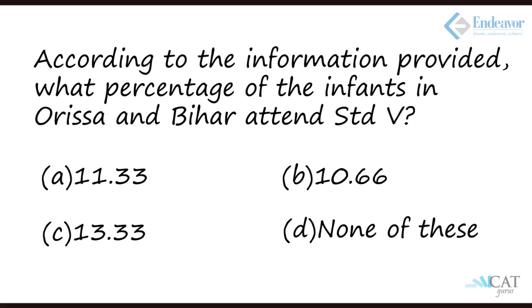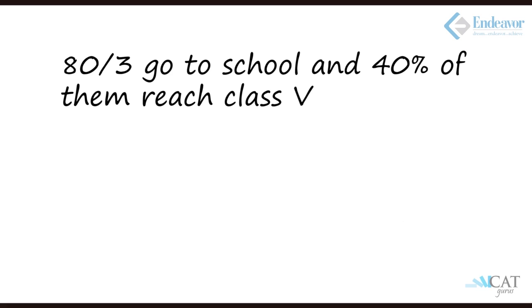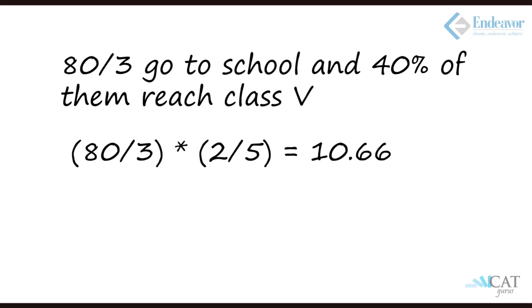Question 1: What percentage of infants in Orissa and Bihar attend Standard 5? If 100 are born, 10 die at infancy, so 90 survive; an equal number die before age 5, leaving 80. One third are child labourers and half the rest — again one third — go to school, so 80/3 go to school. Of these, 40% reach Class 5: 80/3 × 2/5 = 10.66%.